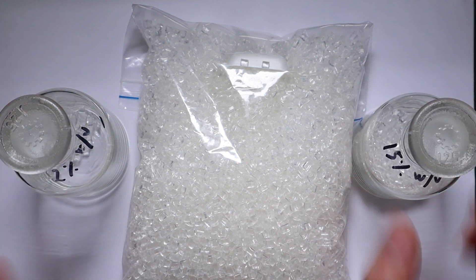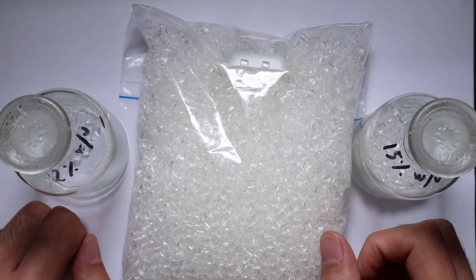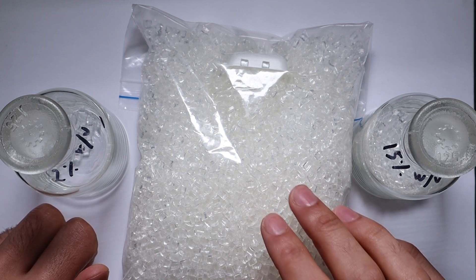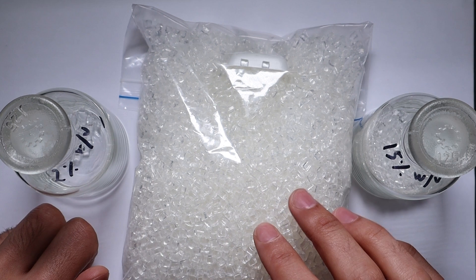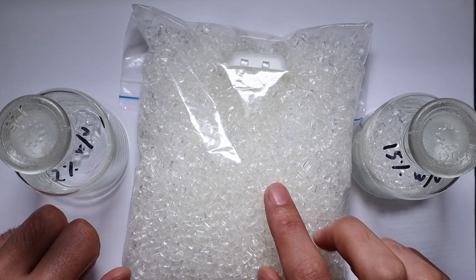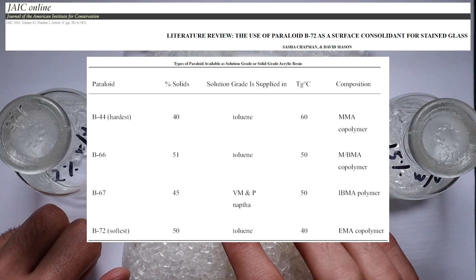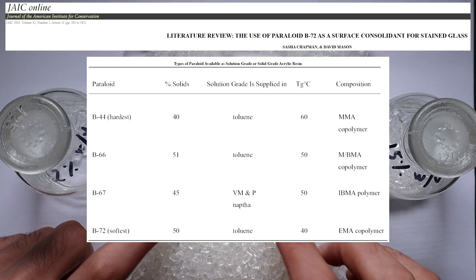Paraloids are a huge family of acrylic resins. The most common one is B72, and B67 is also very popular. The reason I've chosen B44, even though it's more expensive, is the glass transition temperature of this is much higher.